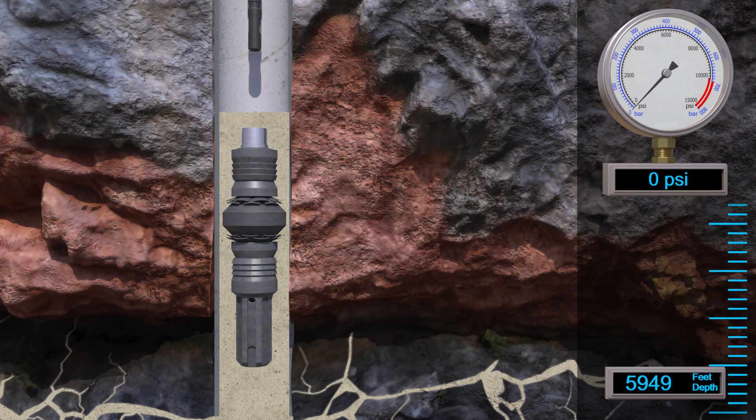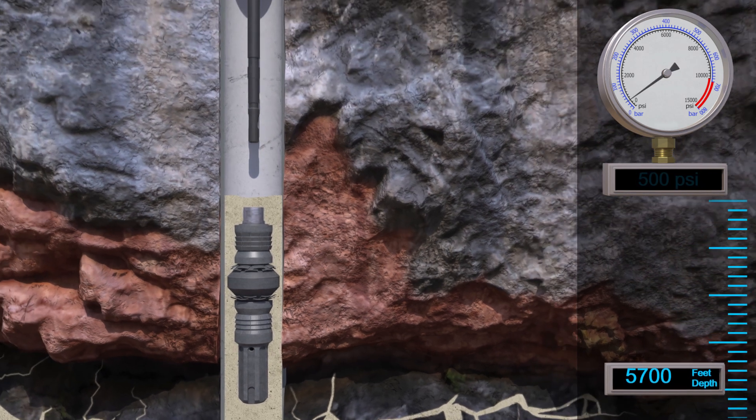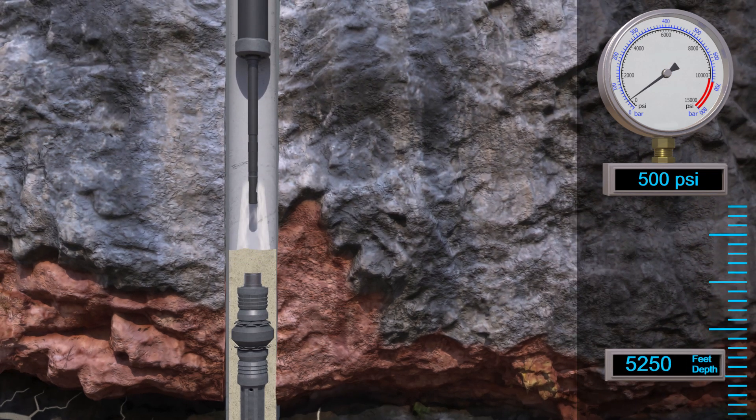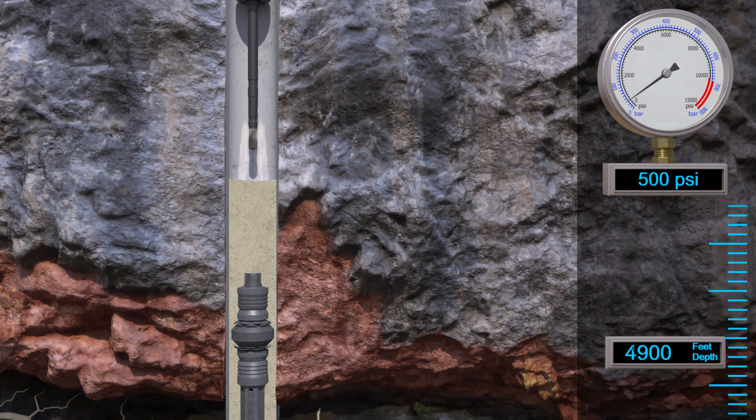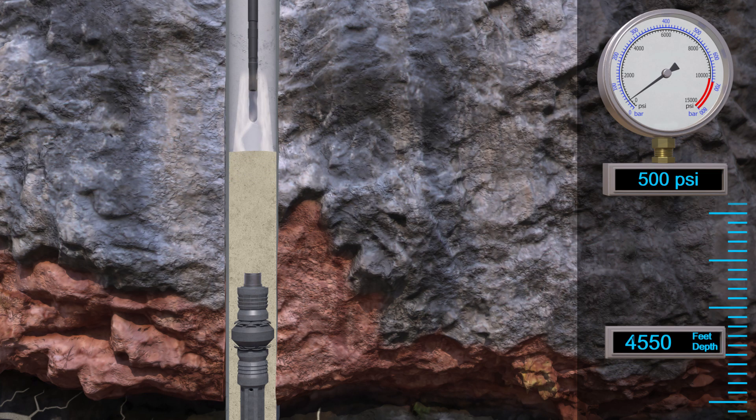Let's pull out of the cement and do a quick pressure test of the casing to 1000 psi. Casing is good. Now let's pull out to 5000 feet and do a balanced cement plug over a gaseous formation where regulators have chosen they want extra protection. We'll spot cement from 5000 feet to 4500 feet.